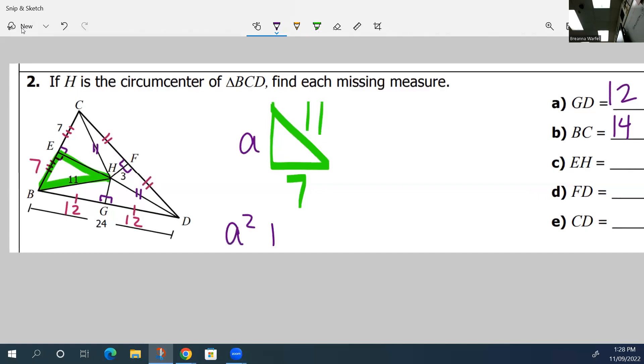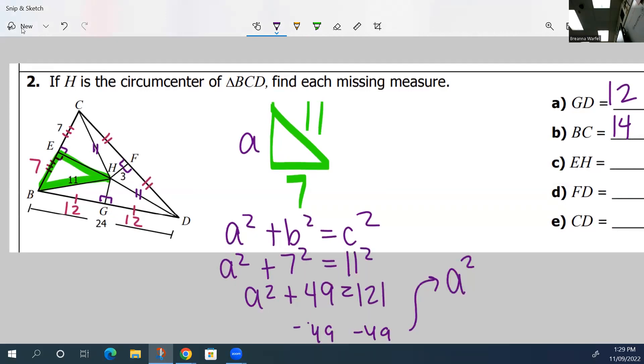A squared plus B squared equals C squared. A squared plus 7 squared equals 11 squared. A squared plus 49 equals 121. You're going to subtract 49 on both sides. So you have A squared equals 72. And take the square root. And so A is about 8.5 if you round.